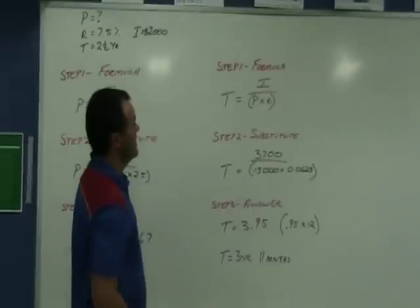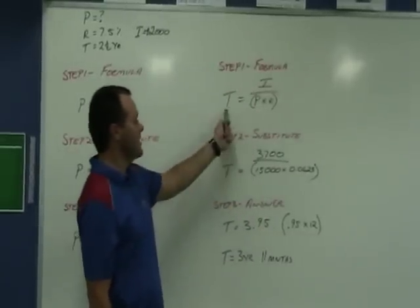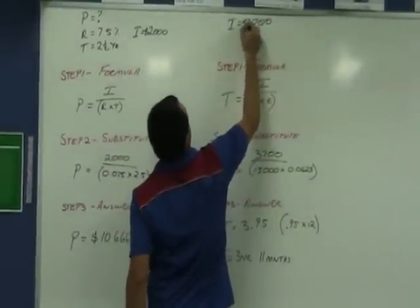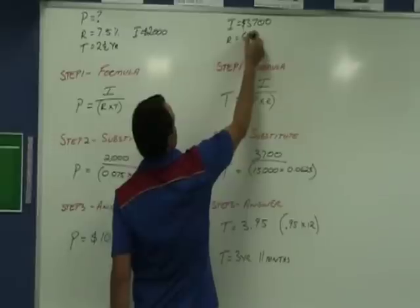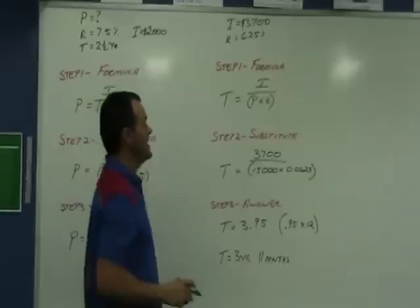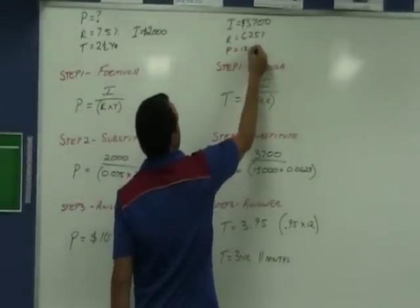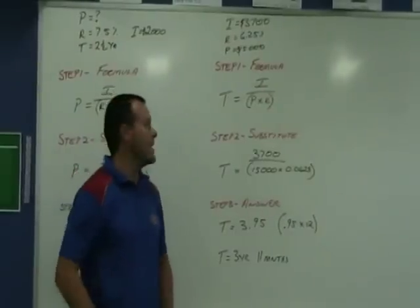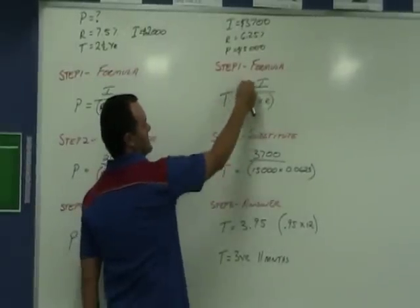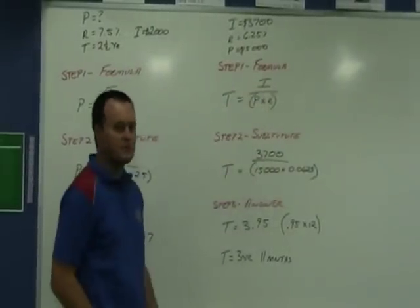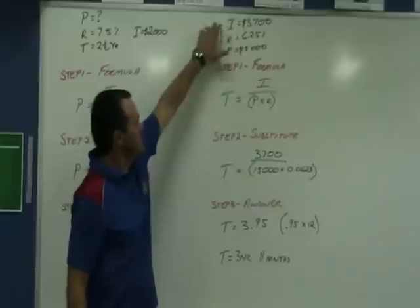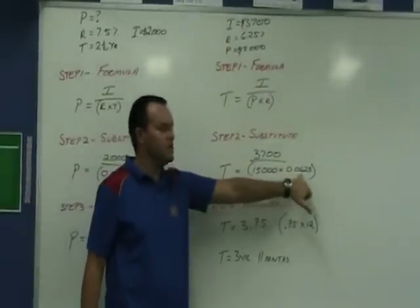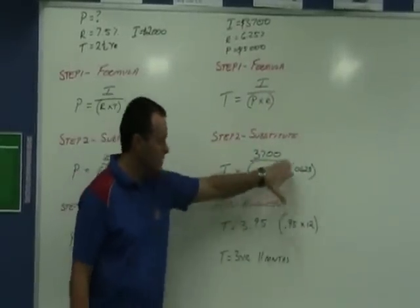The next one was, we're finding the time. We had interest of $3,700. We had a rate of 6.25%. And we had a principal of $15,000 and we were finding how long would that be invested for to earn that interest. Formula - time is interest divided by principal times the rate. Step 2, substitute in. Interest, $3,700. Principal, $15,000. Rate, 0.0625 as a decimal fraction. Put those brackets in. Put it in our calculator.